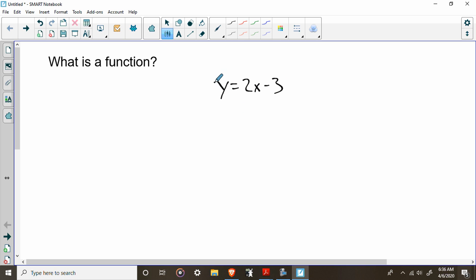Well, now I'm not going to say Y. I'm going to say F of X is equal to 2X minus 3. This is pronounced F of X. Meaning it is a function of X. It is what comes out when I plug in a number for X.